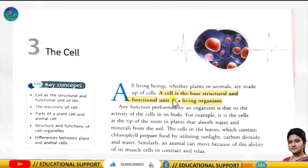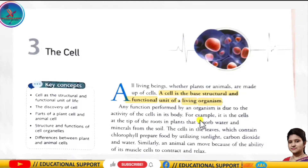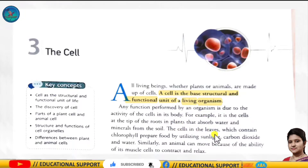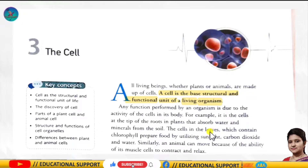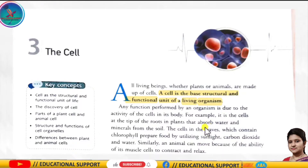An organism performs functions because of the activity of the cells in its body. For example, in plants the cells in the roots absorb water and minerals from soil, but the cells in the leaves contain chlorophyll for preparing food by the help of sunlight, carbon dioxide, and water. Similarly, an animal can move from one place to another due to the muscle cells.